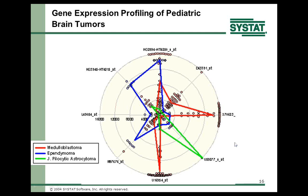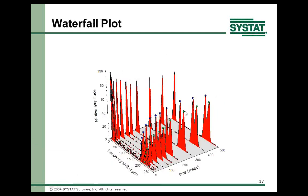A waterfall plot is a multiple area plot with stacked areas. This was published in Science Magazine — the person wanted to show the time constant difference between two peaks. To emphasize that, they put a 3D symbol on the peaks to show one was more rapidly occurring (shorter time constant) versus the other (longer time constant). They created two plots superimposed, and you can do this in Sigmaplot — putting different types of plots on top of one another.